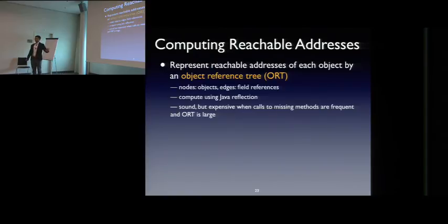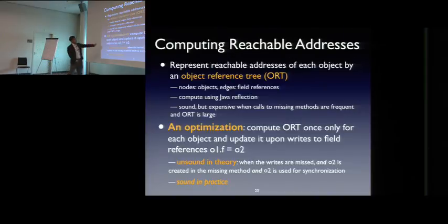Another problem. How do you compute the reachable addresses efficiently? So in general, this is Java program. So every object, we can trace the references of the object transitively and which can be formed actually as an object reference tree. For example, you have object O and O has a field F. F can reference another object O2. Then you have to do that transitively. Of course, you want to break the back edges. So this becomes a tree. So nodes represent object and edges reference field references in Java program. And we can compute this with Java reflection, which is sound but expensive. Because the missing methods are frequent and if the tree or the object reference tree is very large.